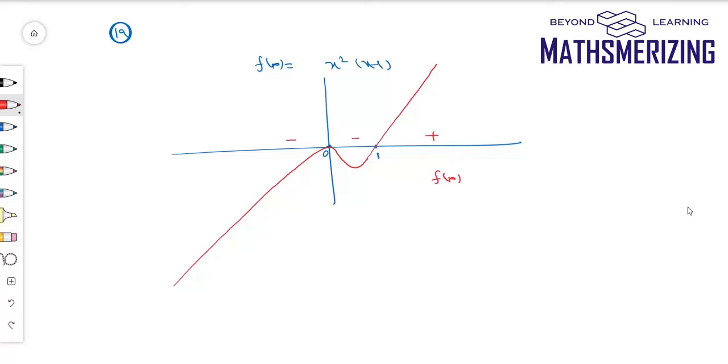What if the question is f(x) equals x into (x-1) whole squared? Now here again, I will mark 0 and 1. So this is plus, so there is no sign change at 1.